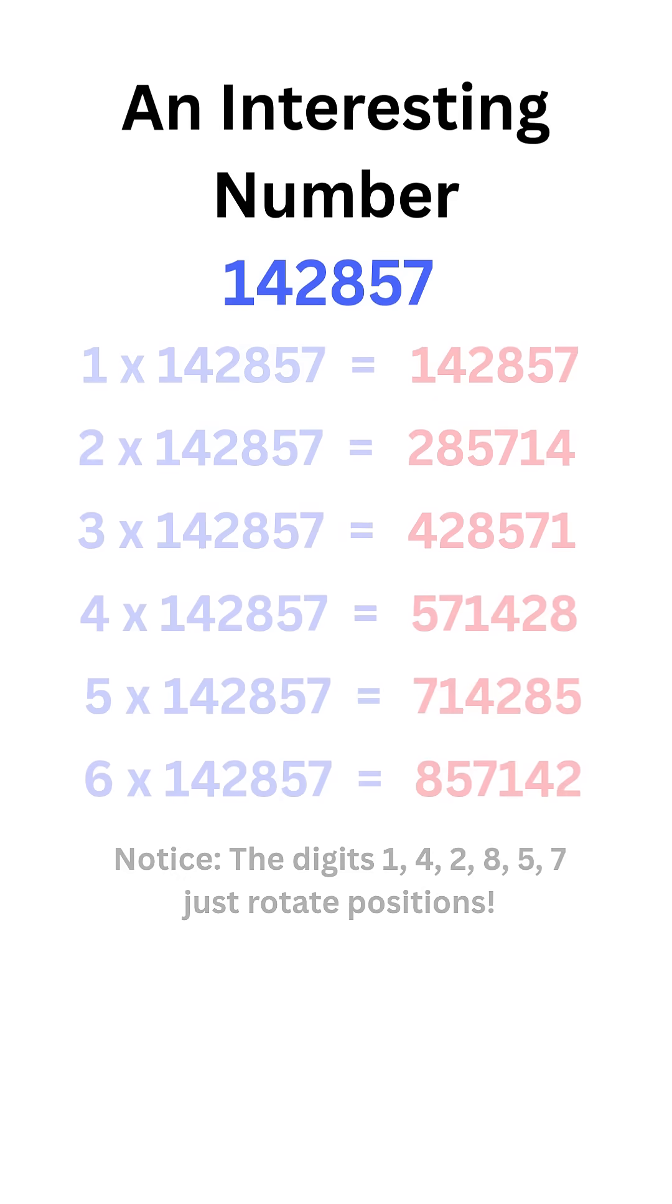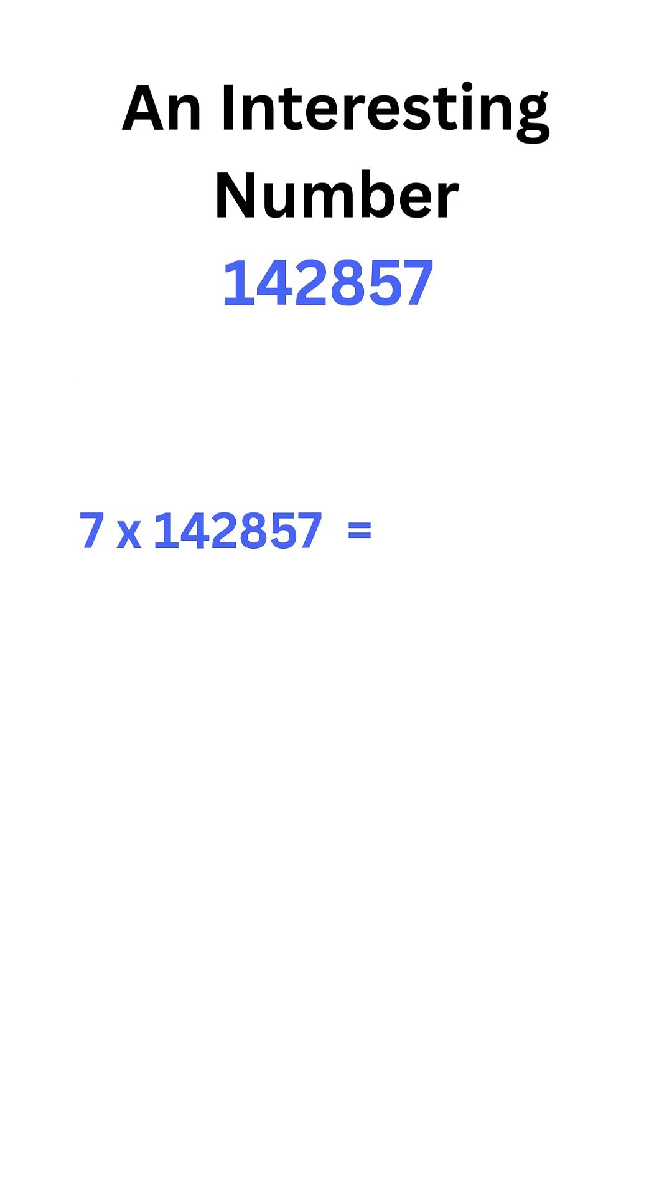But wait. Let's multiply 142,857 with 7. We get 999,999. What? Why is this happening? Maybe there is a relation between these two numbers. Let's find out.